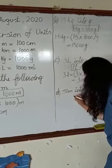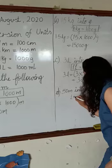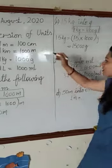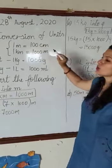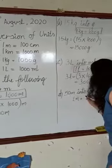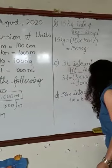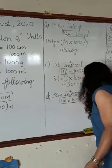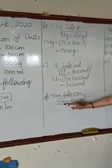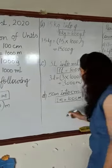First of all, we will write 1 meter is equal to 100 centimeters. We will write 100 centimeters here and put it in a box. This is important: 1 meter equals 100 centimeters.